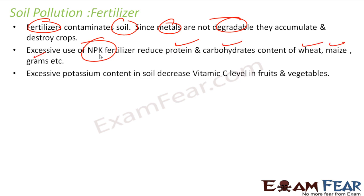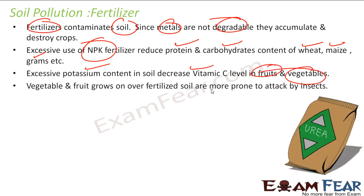maize, and grains. Excessive potassium in soil decreases the vitamin C level of fruits and vegetables. Fruits and vegetables grown on excessively fertilized soil are also prone to attack by insects, so excess fertilizer use is not good.